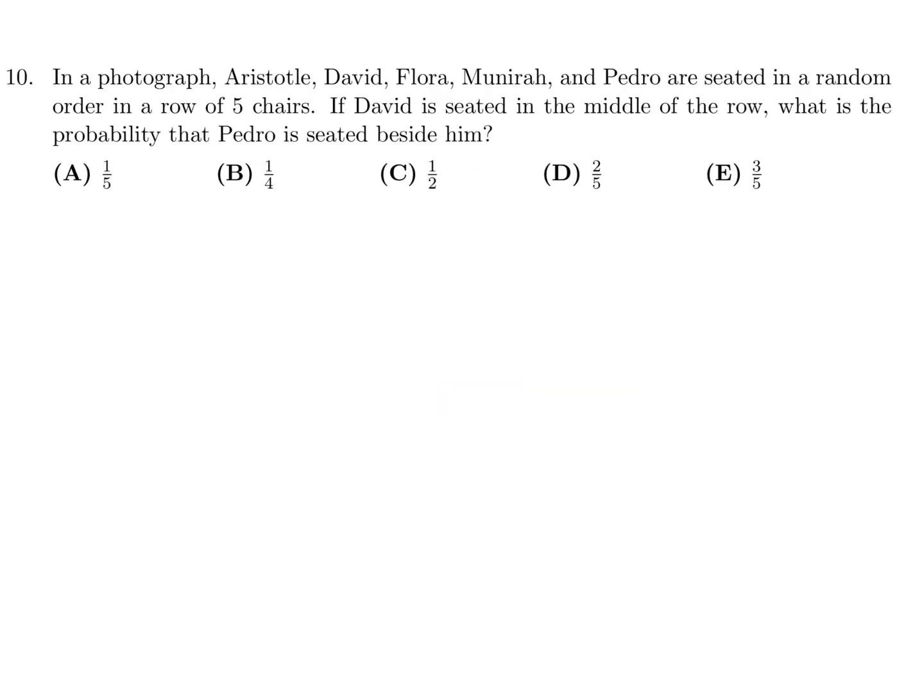In a photograph, Aristotle, David, Flora, Munira, and Pedro are seated in a random order in a row of five chairs. If David is seated in the middle row, what is the probability that Pedro is seated beside him? So we have five seats, and they've told you that David is in the middle for sure. So he's fixed there. And they're saying, we want Pedro to be either here or here. In any probability question, it's usually a fraction. The bottom is the total number of choices. Our total number of choices are 1, 2, 3, 4.